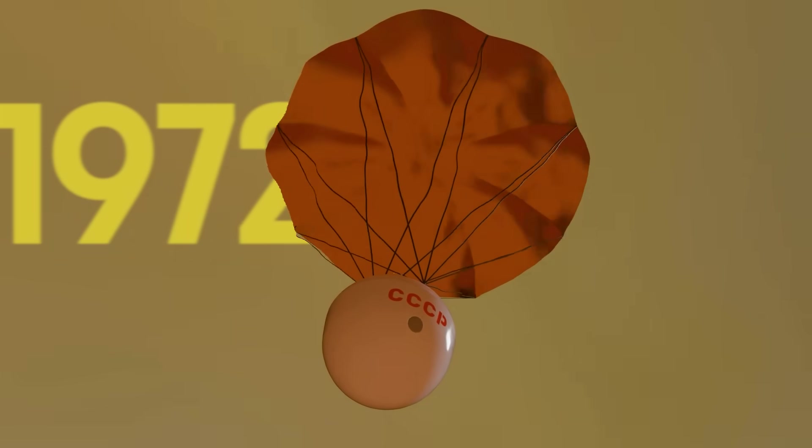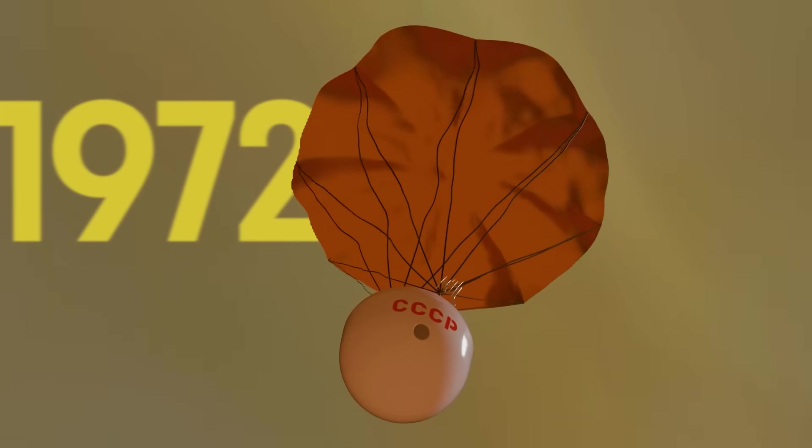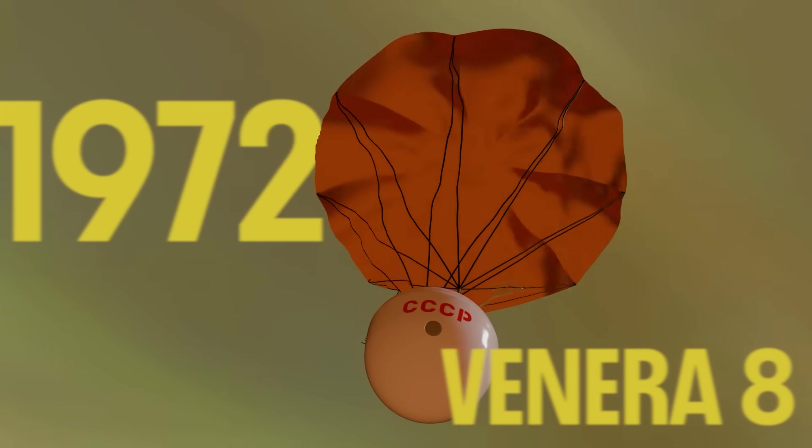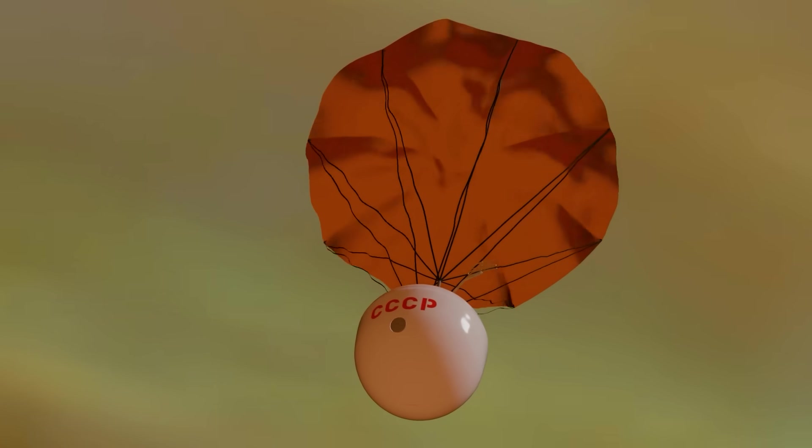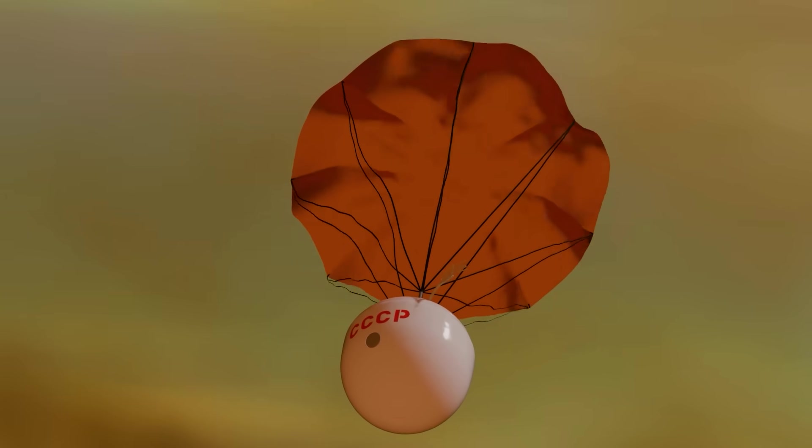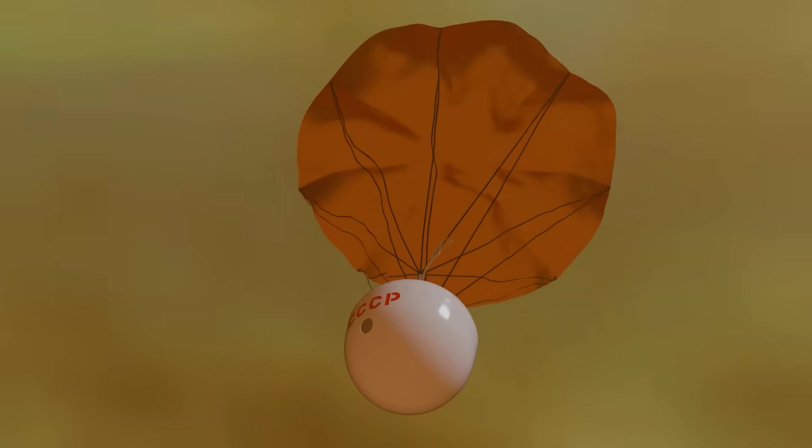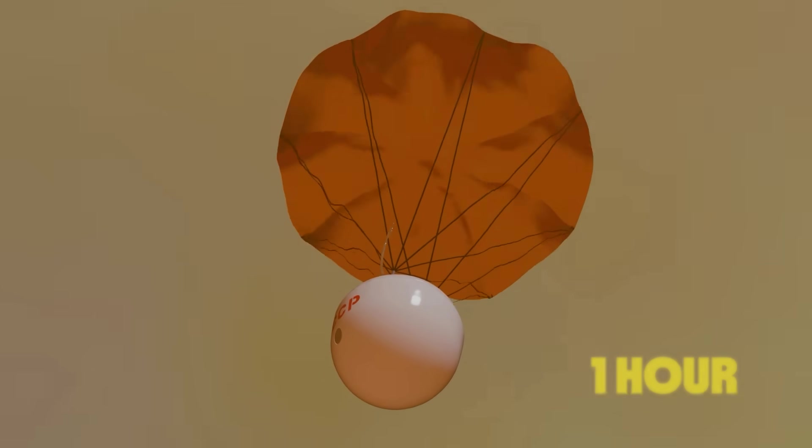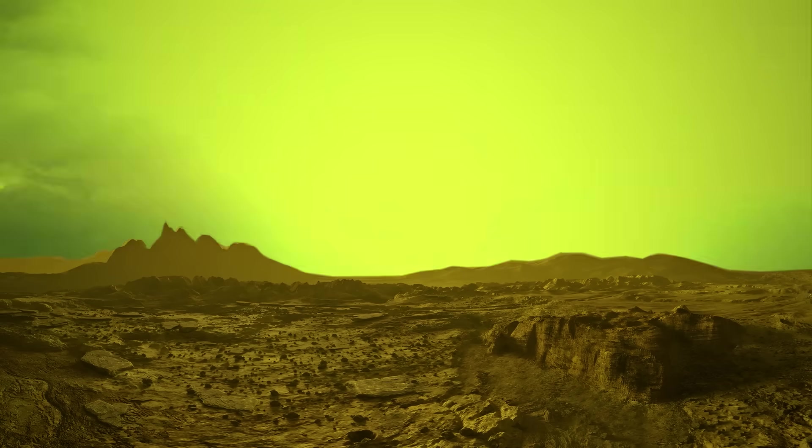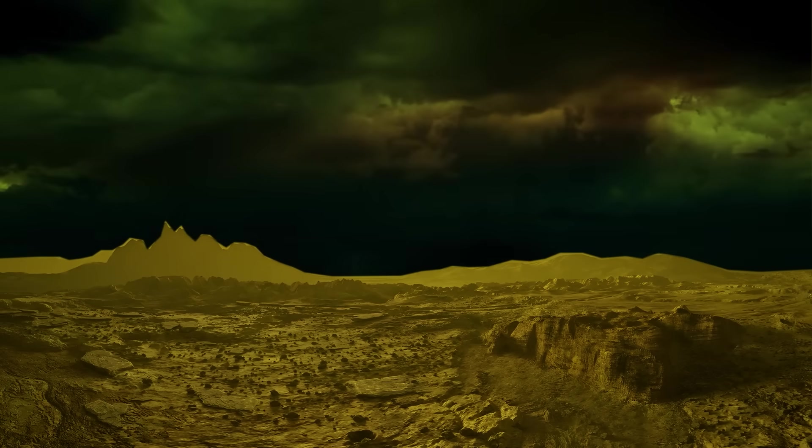Then, in 1972, they would return to Venus yet again with Venera 8. Miraculously, this probe would not face any technical difficulties along the way. The descent module parachuted down softly onto the planet's surface with all of its instruments intact and recorded data for nearly one hour.